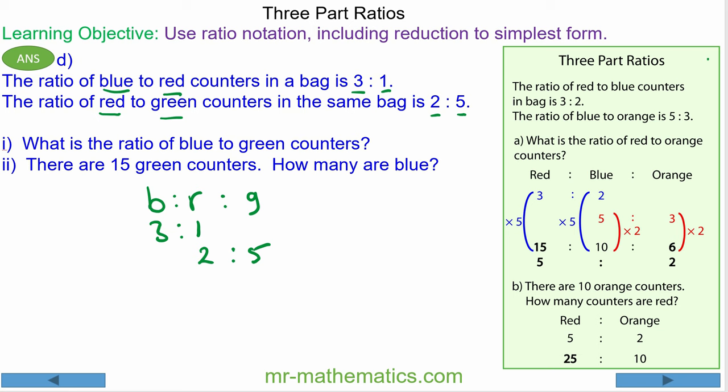We already have 2 to 5, but we need to multiply this ratio by 2 because 1 times 2 makes 2, and 3 times 2 makes 6. It asks what is the ratio of blue to green.